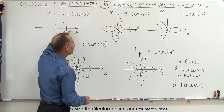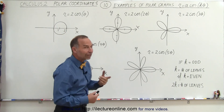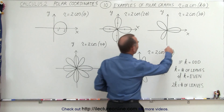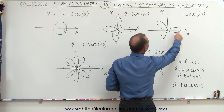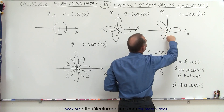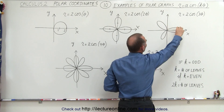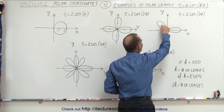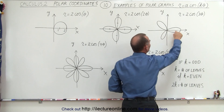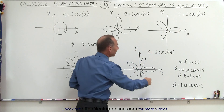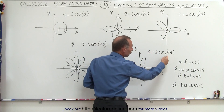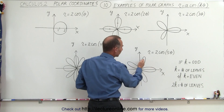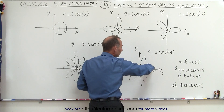One will be on the positive x-axis, but notice that all the other leaves will not be on top of an axis. For example, with three leaves, the angle between each must be 120 degrees. If this one is on the x-axis, there's 120 degrees difference here, 120 degrees, and then 120 degrees back. In the case of k equals 5, notice the angles between will be 72 degrees each — 72, 72, 72, 72, and 72.